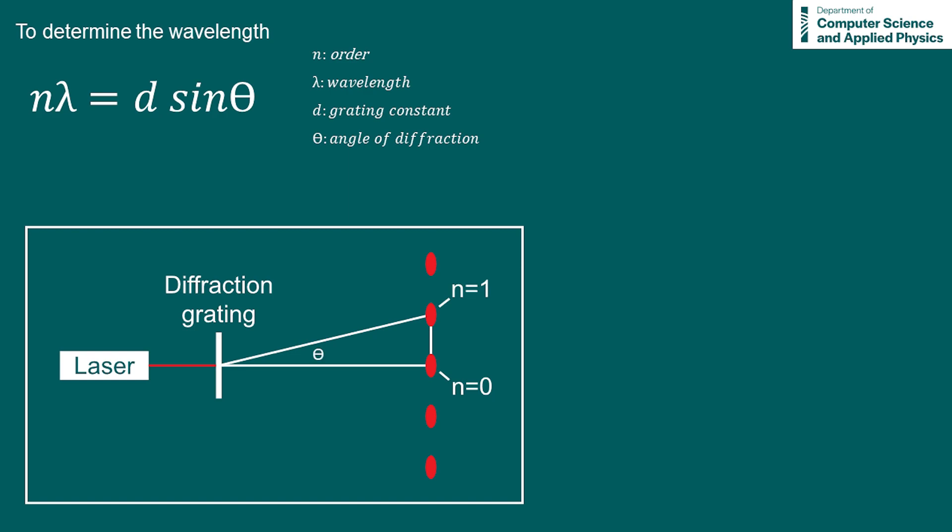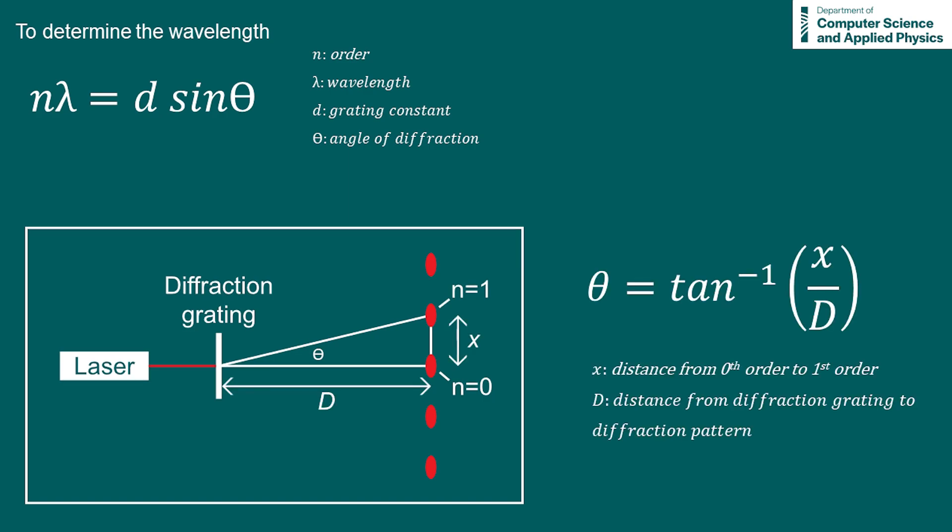This angle is our value theta. To determine a value for theta, we can measure the distance from the zeroth order to the first order, x, and the distance from the diffraction grating to our diffraction pattern, d. We then use inverse tan of x over d to solve for theta, the angle of diffraction.